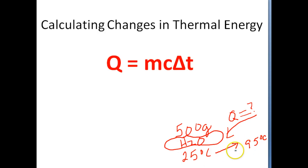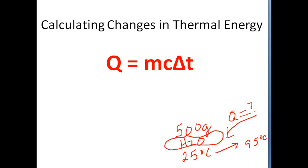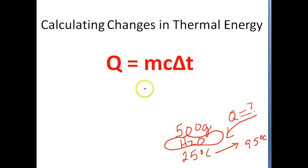Do you think there might be a formula that will allow you to calculate changes in a substance's thermal energy as its temperature either decreases or increases? Well, the answer is yes. We can use the thermal energy equation, which states that the amount of thermal energy released or absorbed by a system is equal to its mass times its specific heat capacity times its change in temperature. When working with this formula, we must assume that there is no change in state of matter.